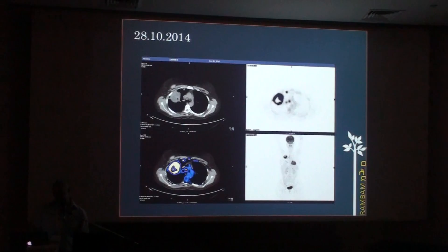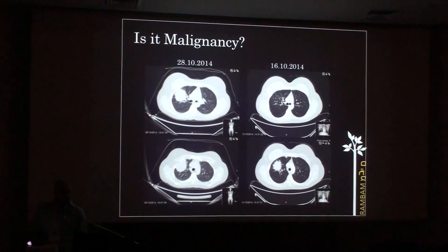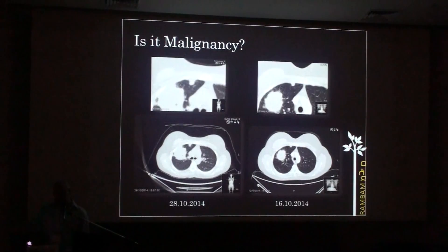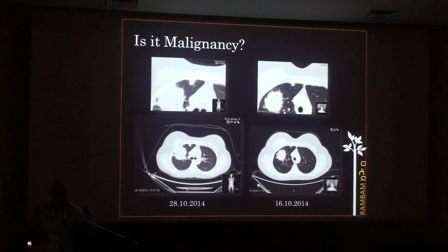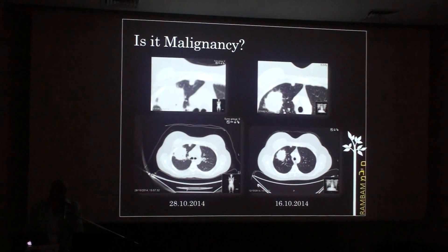Compared to the previous exam, the lesion grew significantly. An air bubble appeared within it, and even the subpleural nodule changed — all within the days between the first CT and the PET CT. The question arose, imaging-wise, whether it is malignancy that developed so fast, changed so rapidly, and developed cavitation or a necrotic area so rapidly.